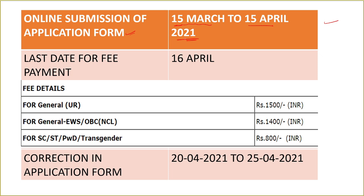Fee payment deadline is 16th April 2021. Fee details: General merit candidates pay 1500 rupees. For General merit EWS — that is Economically Weaker Section — and OBC non-creamy layer, the fee is 1400 rupees. For SC, ST, PWD, and transgender candidates, the fee is 800 rupees.